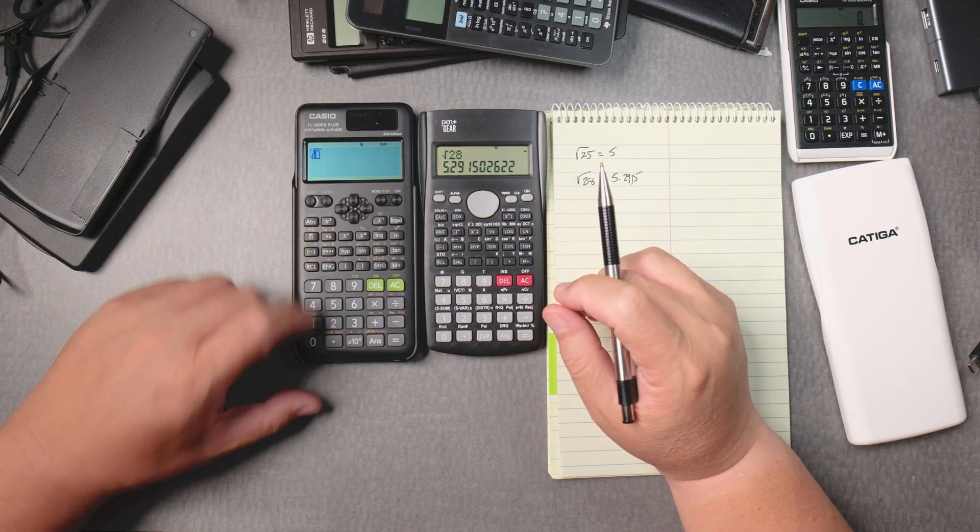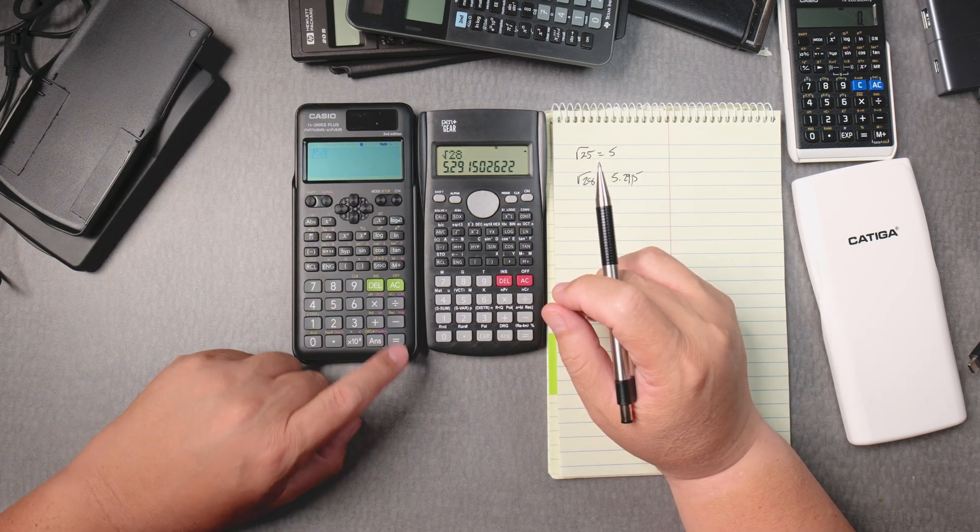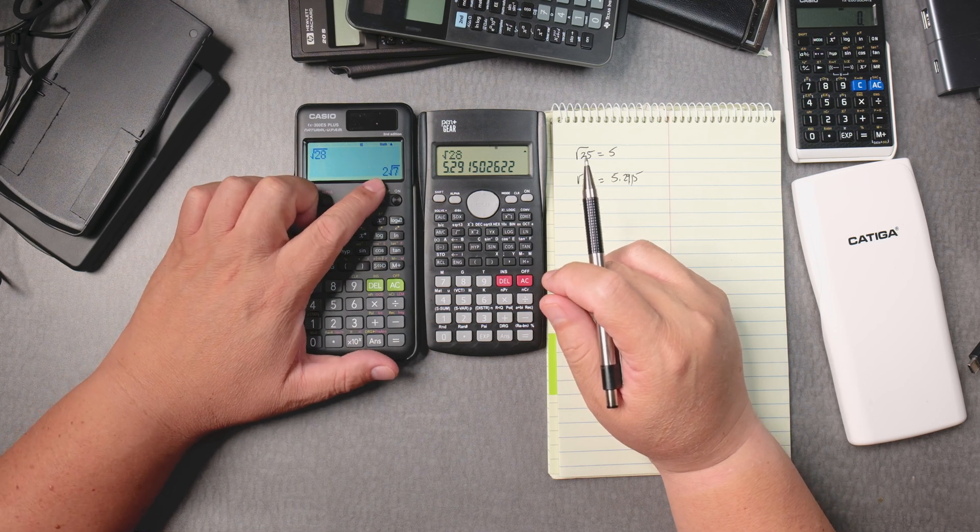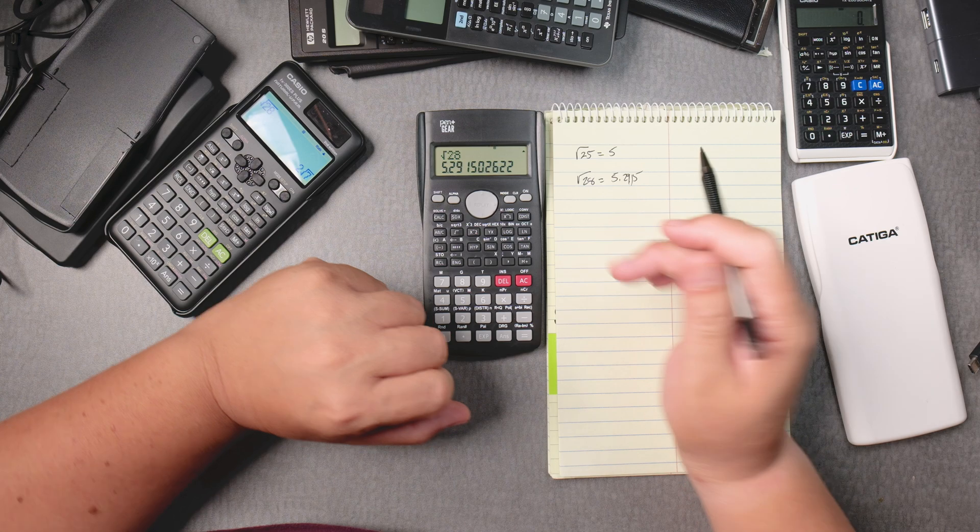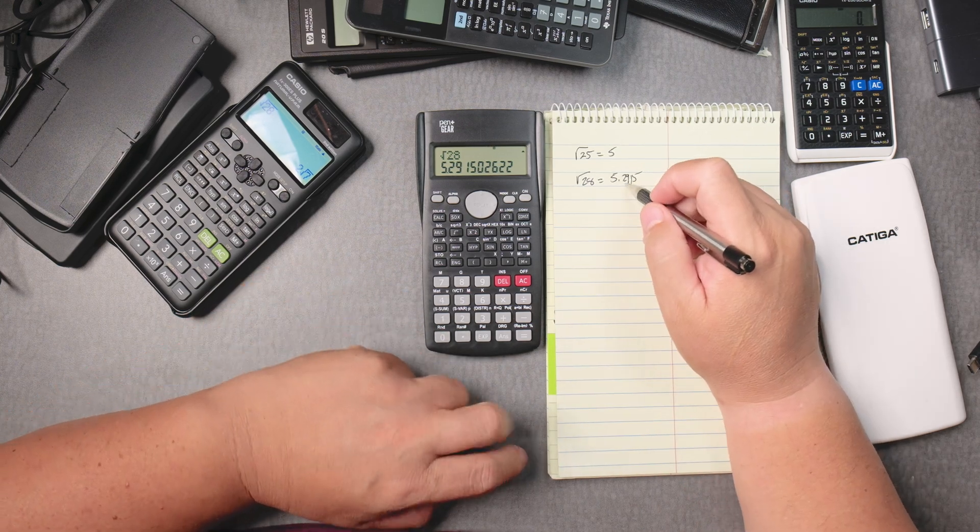If you take the square root of 28 and you press equals, it gives you 2 square root of 7. Unfortunately, this calculator doesn't do it. It gives you a decimal answer.